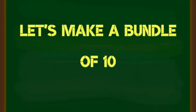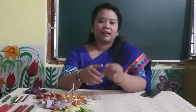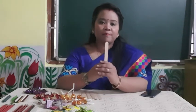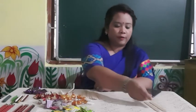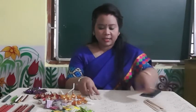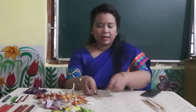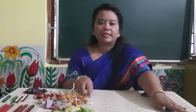Let's make a bundle of ten. Can you see this is an ice cream stick? Let's make a bundle of ten sticks: one, two, three, four, five, six, seven, eight, nine, ten. So this is a bundle of ten sticks.